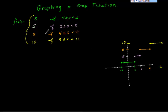Likewise, f of x has a height of 8 when x is greater than or equal to 4 but less than 9. That's from here to here. 4 is included because x is greater than or equal to 4, so equal to includes the 4, all the way over to 9. But 9 is not included because it says less than 9, and 9 is not less than 9.